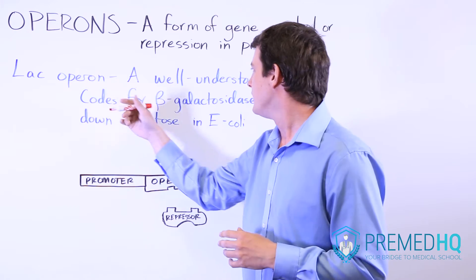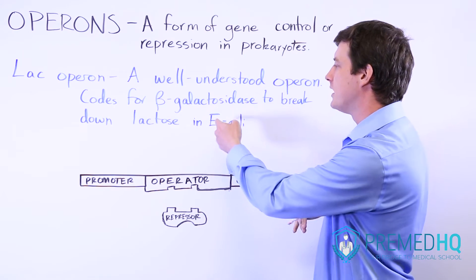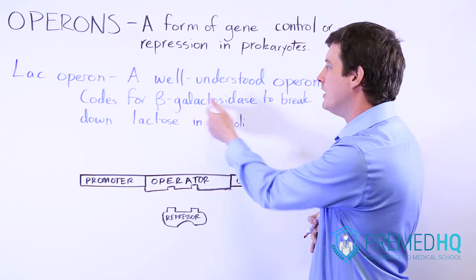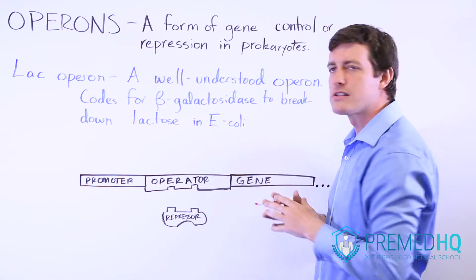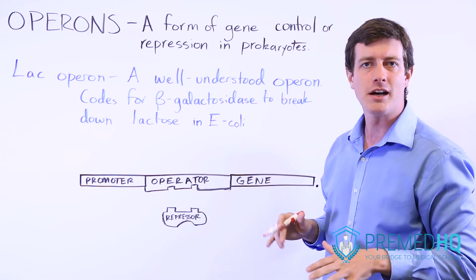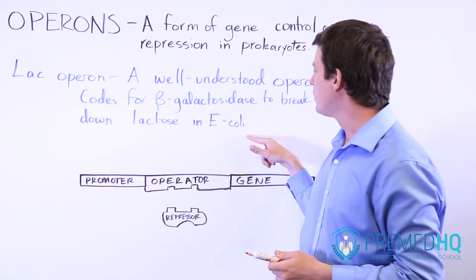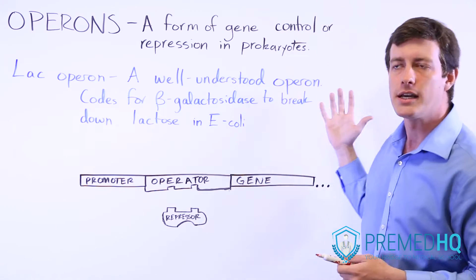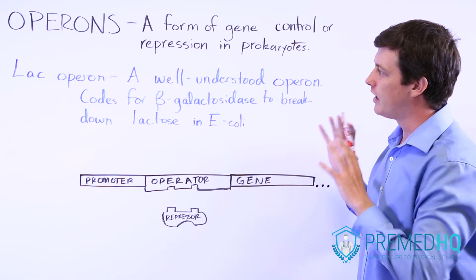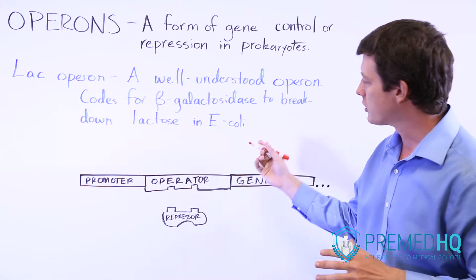The LAC operon codes for beta-galactosidase — because it's an '-ase' you know it's an enzyme — and as a galactosidase it helps you metabolize or break down lactose. This is encountered in E. coli, which is a prokaryotic cell type.